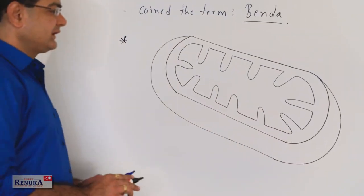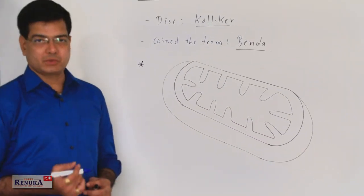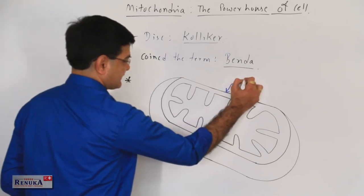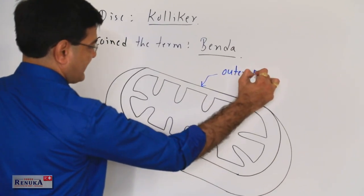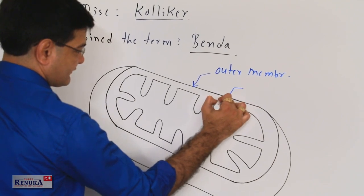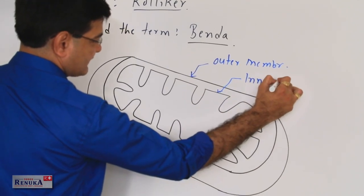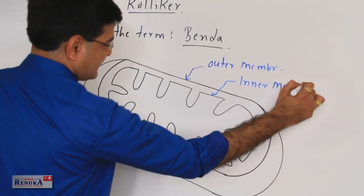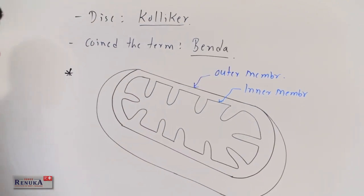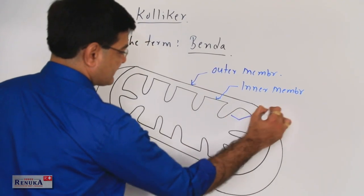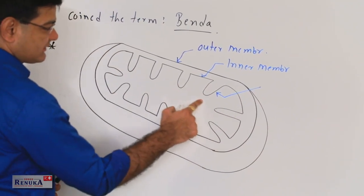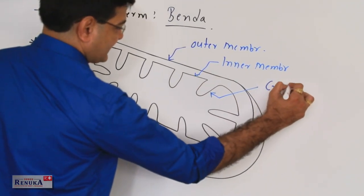This is the internal structure of mitochondria. It has the outer membrane and the inner membrane. The finger-like projections of the inner membrane are called cristae.